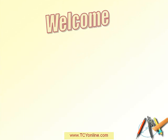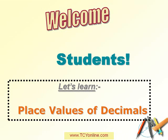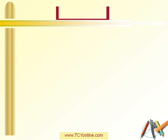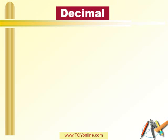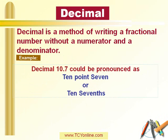Welcome student. Today let's learn about place values of decimals. Let's first look at the meaning of the term decimal. Decimal is basically a method of writing a fractional number without writing a fraction having a numerator and denominator. For example, 10.7 could be pronounced as 10.7 or 10 and seven tenths.